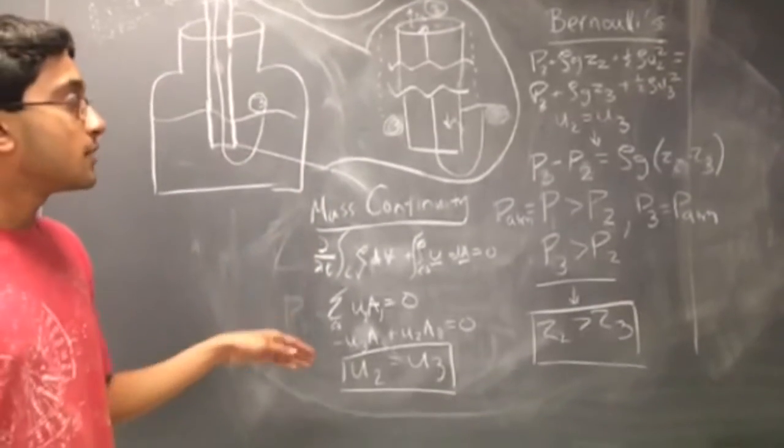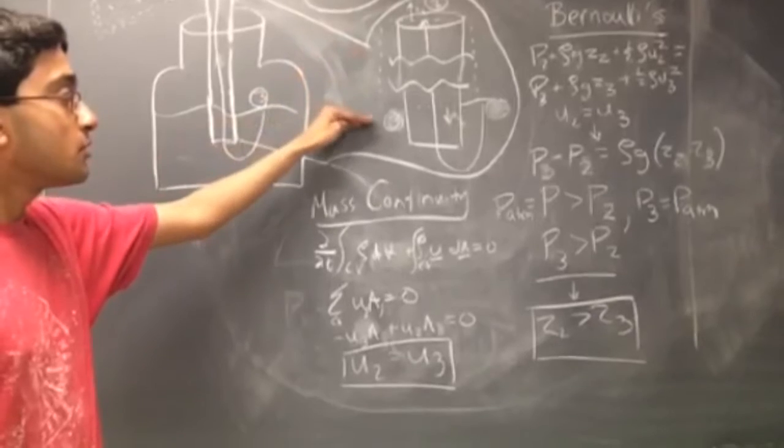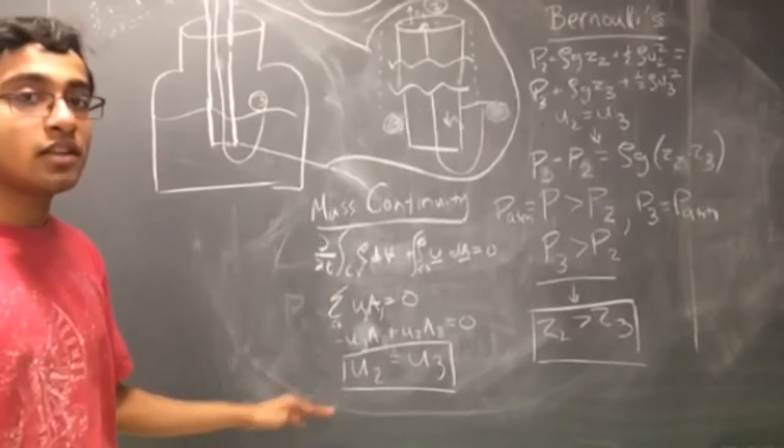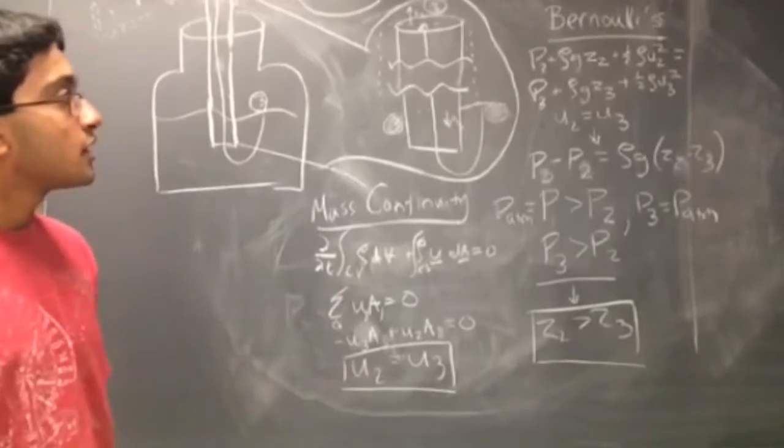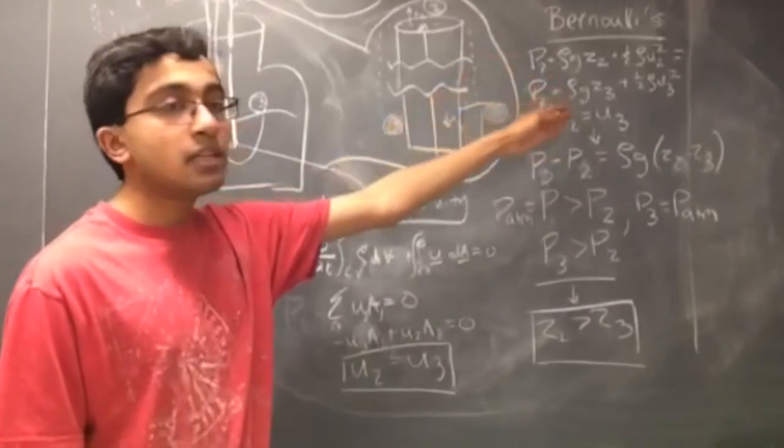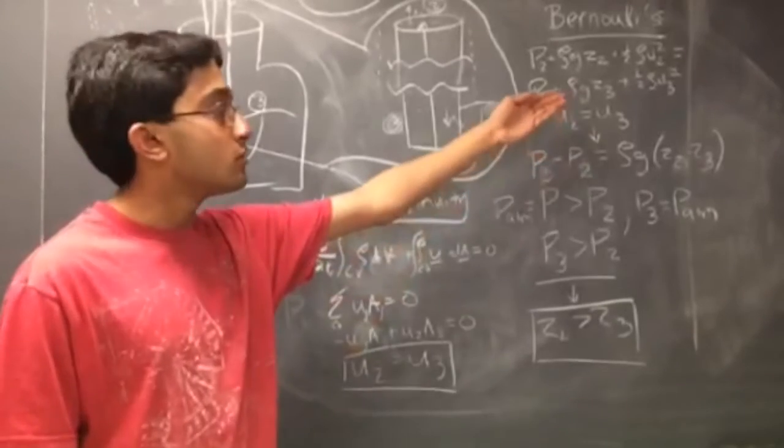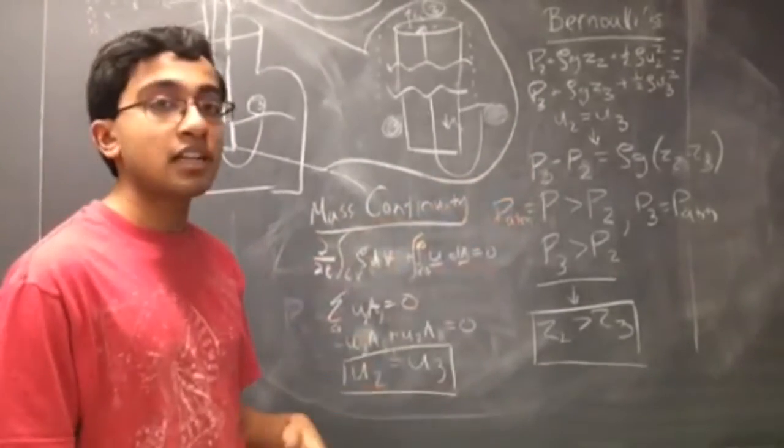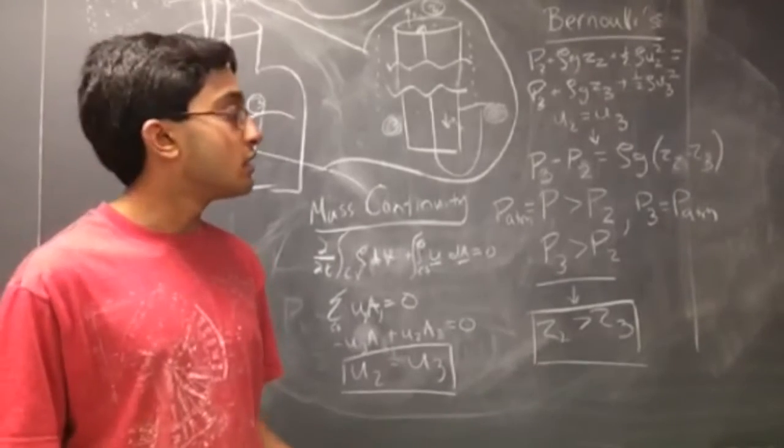Focusing on the tube portion, we can use mass continuity on two points along the tube, 0.3 and 0.2, to establish that the velocity throughout is equal. Therefore, using Bernoulli's, we can eliminate the velocity portions as U2 equals U3, and then we get this equation where P3 minus P2 equals rho G Z2 minus Z3.